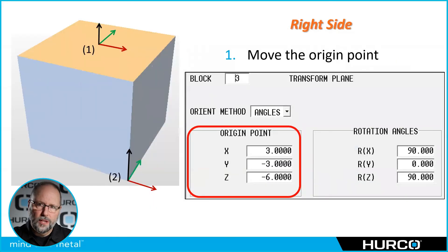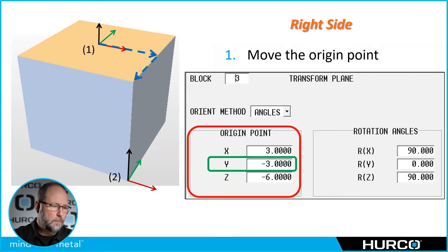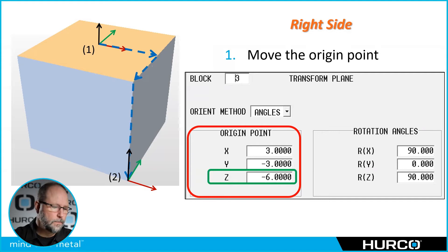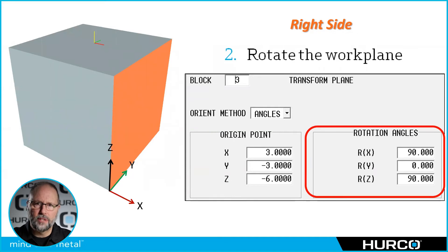If I wanted to do this transform plane, the origin point is no different than what we've done before. We'll just put the x, y, and z values from the original work offset to the new one, but then we're going to rotate around two different axes.